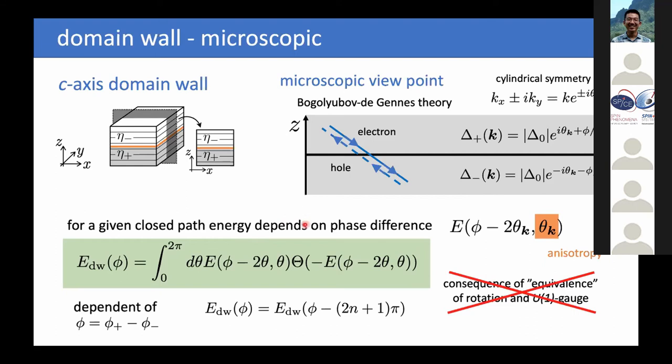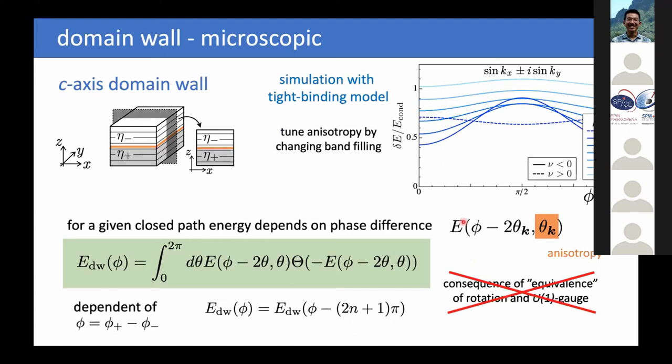In the anisotropic situation, the energy no longer depends only on phi minus 2θ_k but also on the direction, because the Fermi velocities become anisotropic. Then immediately a phase dependence appears, essentially as cos(2φ), possibly with higher harmonics — consistent with what was shown from the Ginzburg-Landau analysis.